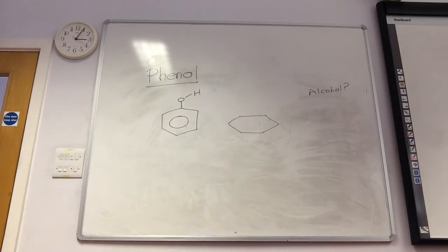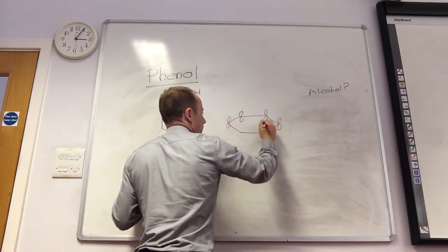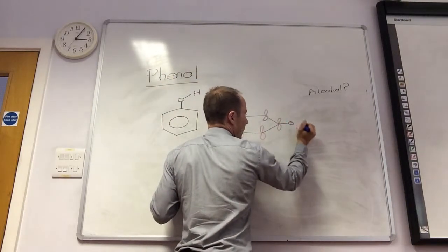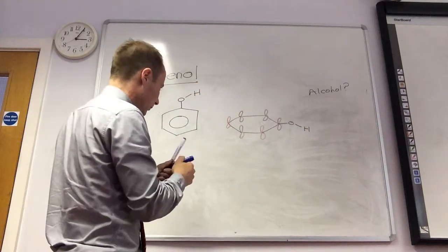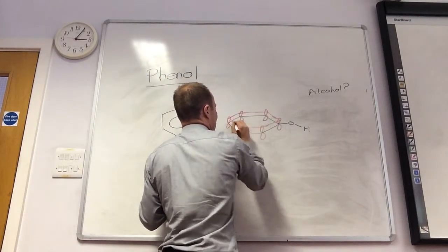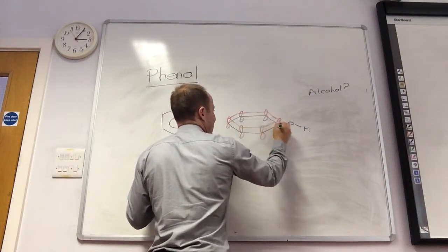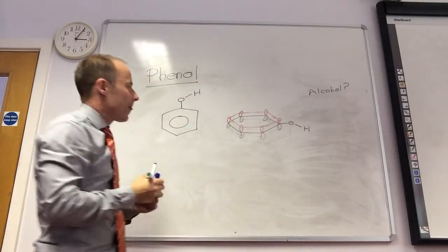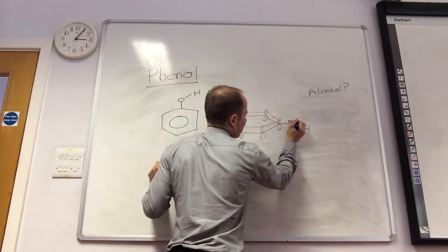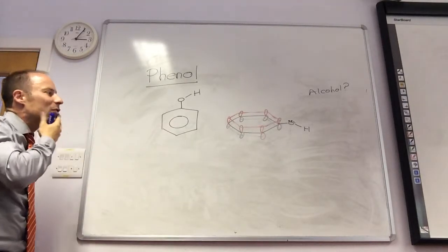There's my benzene ring. Let's pop on my delocalized electrons. Coming off of that, I've got oxygen and a hydrogen there. And I'm going to draw up my delocalized electrons above and below the ring. And then we'll see the effect of oxygen. So, nothing too extraordinary there.